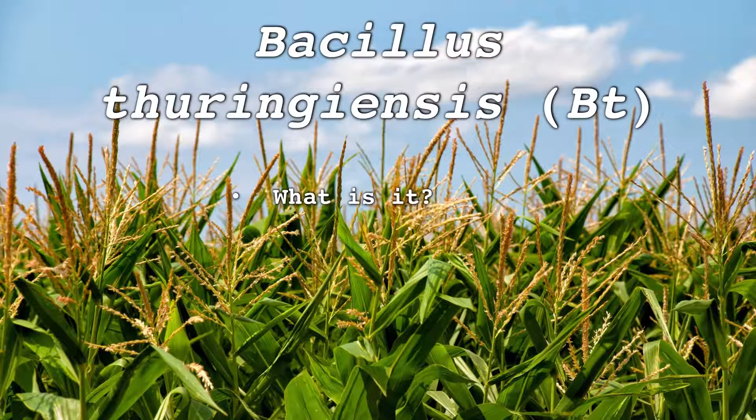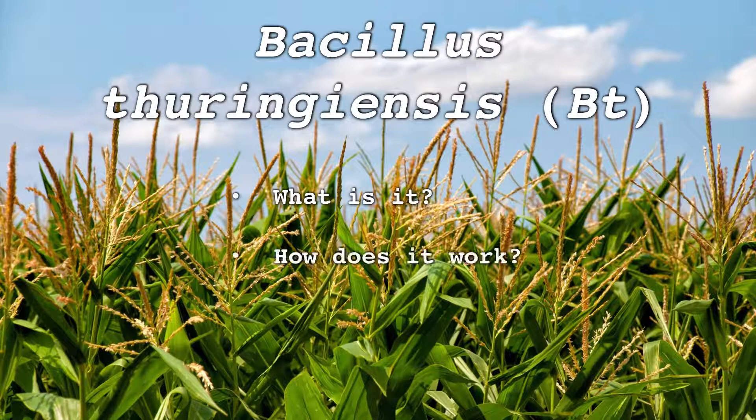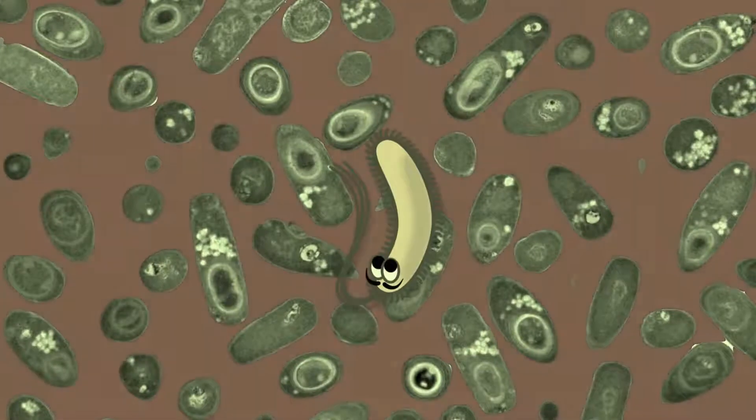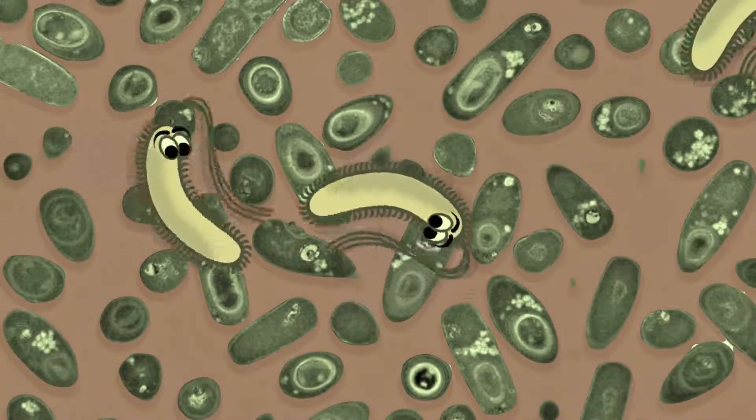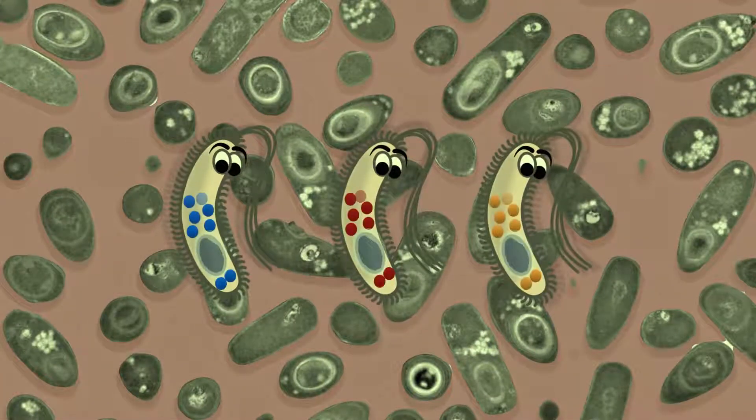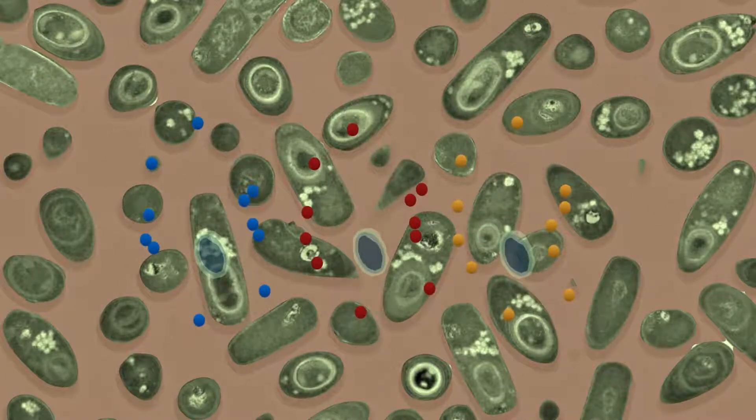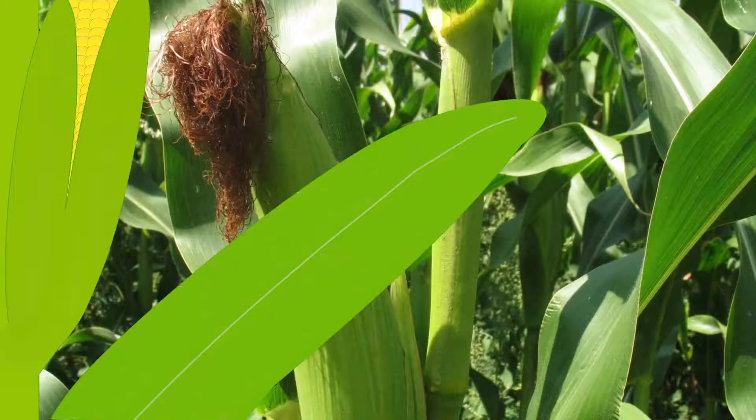We'll talk about what it is, how it works, and its toxicity. Bt is actually a group of closely related soil microbes. Each type of Bt makes a different kind of protein that is toxic to specific groups of insects.